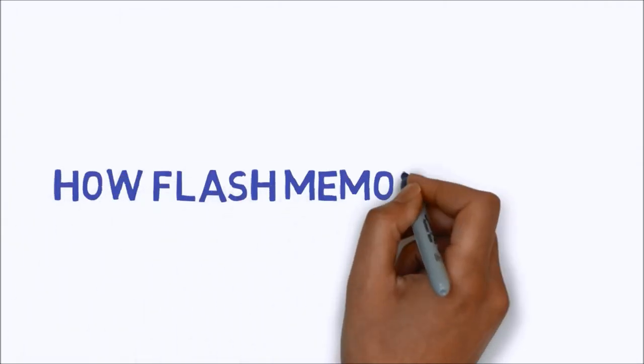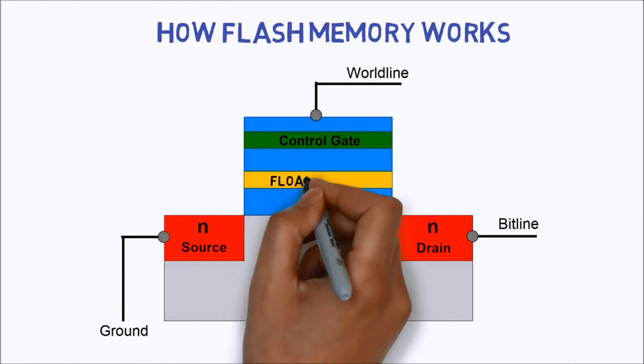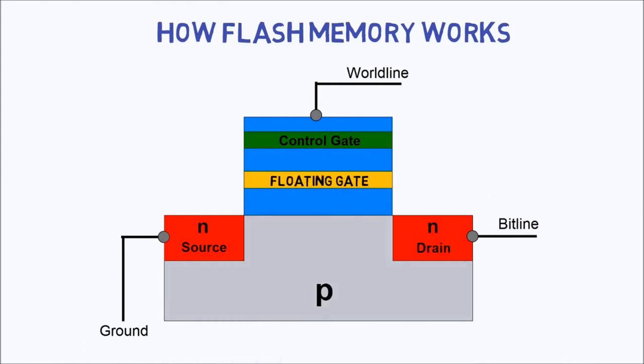To begin with, we need to know a little about how flash memory works. A flash memory cell is basically a transistor with an electron trap called the floating gate. When the transistor turns on, some of the electrons in the current will tunnel through a thin insulating layer into the floating gate.